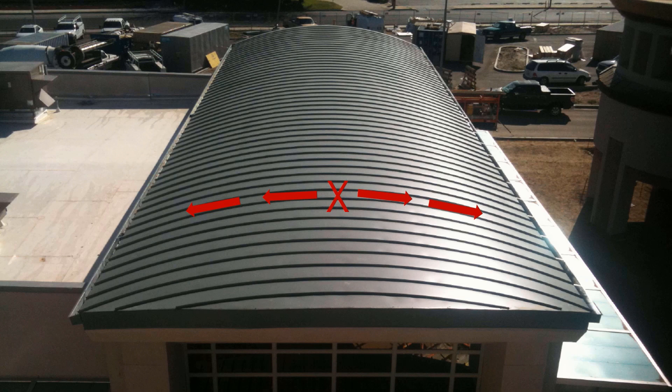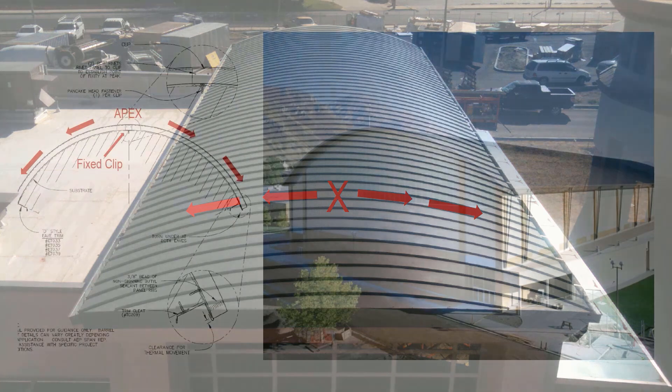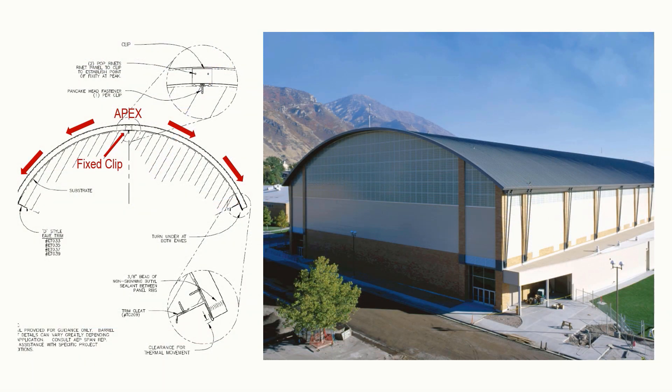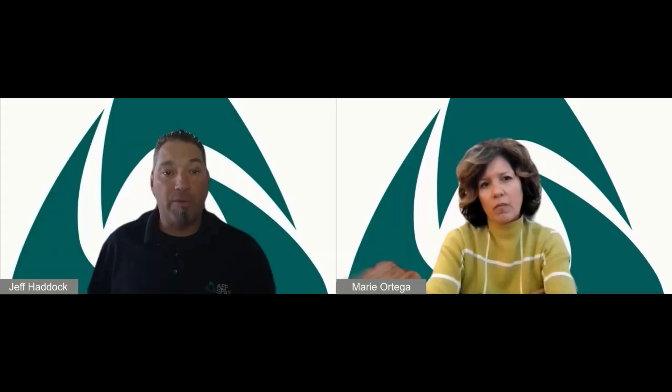Radius roofs or barrel roofs are curved roof applications that require the apex to be fixed or pinned, as the panels cannot expand and contract around a radius. If the panels float around the full radius without a point of fixity at the apex, oil canning or deflected appearance can appear. Fixing the apex using a fixed clip establishes a point of fixity and forces thermal movement to both eaves.